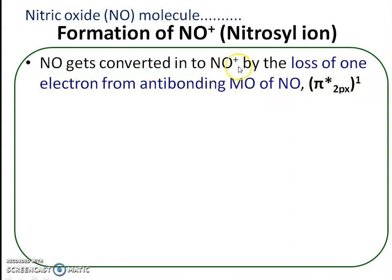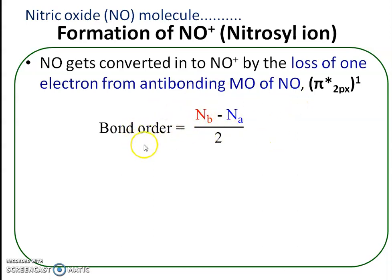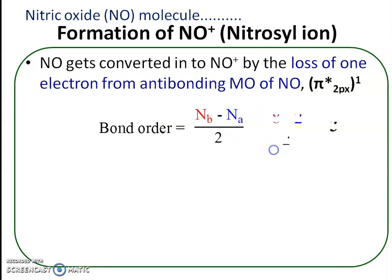In that case, the bond order changes. The formula for bond order is: number of bonding electrons minus antibonding electrons, divided by 2. The bonding electrons remain the same, that is 8, but the antibonding electrons are reduced by 1. Therefore, bond order equals 8 minus 2 upon 2, which equals 3.